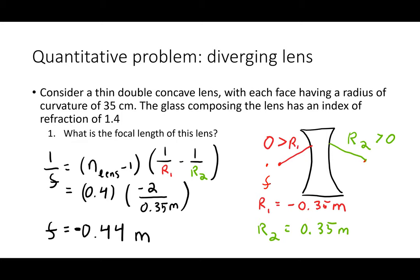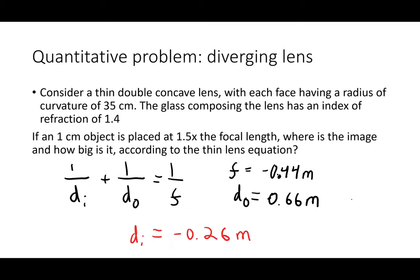Using the thin lens equation with a negative focal length, the image distance is also negative, meaning the image appears in front of the lens — a virtual image. It's important to keep the focal length negative in the equation since this is a diverging lens.